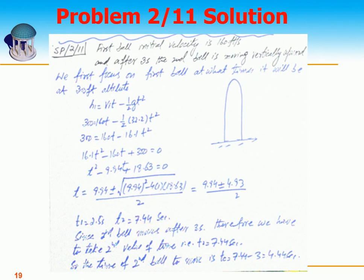Since we need to find where the two balls collide, and ball 2 is launched three seconds after ball 1, we take the second time value of 7.44 seconds. The travel time for ball 2 when they collide is 7.44 minus 3, which equals 4.44 seconds — that is the traveling time of the second ball when they collide.